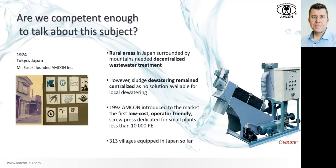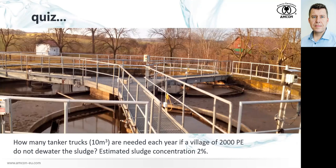Now I have a little quiz for you. Before we talk about the differences between centralized and decentralized sludge dewatering, let's talk about dewatering itself. Don't take it seriously — just estimation, just for fun. How many tanker trucks, 10 cubic meters each, are needed each year in a village of 2,000 population equivalent which does not dewater the sludge? Let's estimate the sludge concentration at about 2%. I'm launching a poll now — you should be able to see options on your screen. So how many tanker trucks do you think?